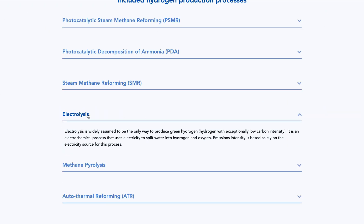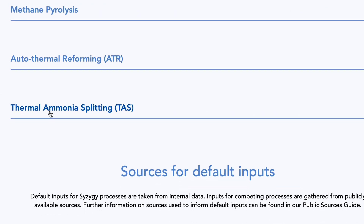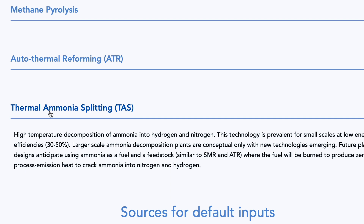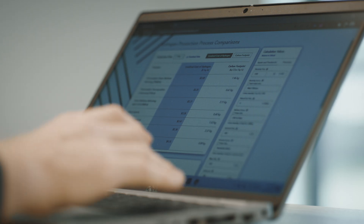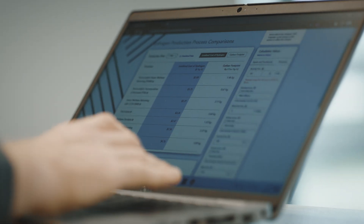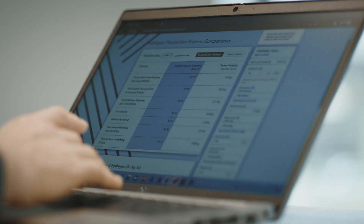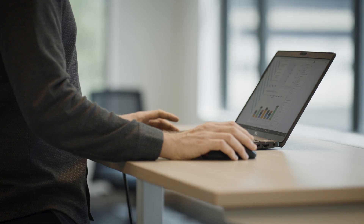You can compare electrolysis versus SMR with carbon capture versus ammonia splitting and many others. We have designed the tool to enable you to quickly adjust inputs like the source and cost of electricity, and the availability and price of natural gas.